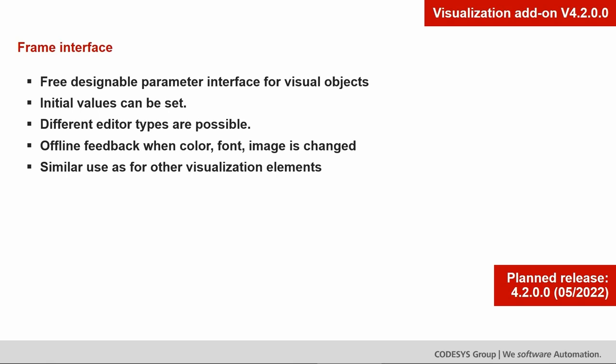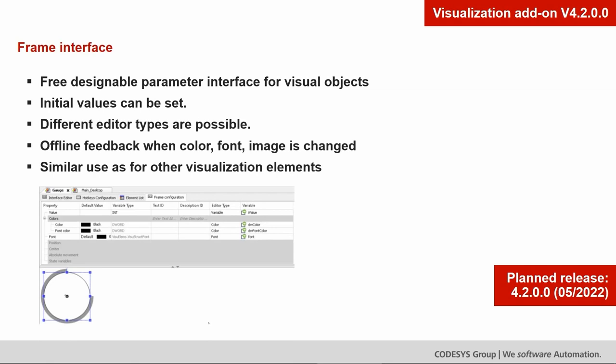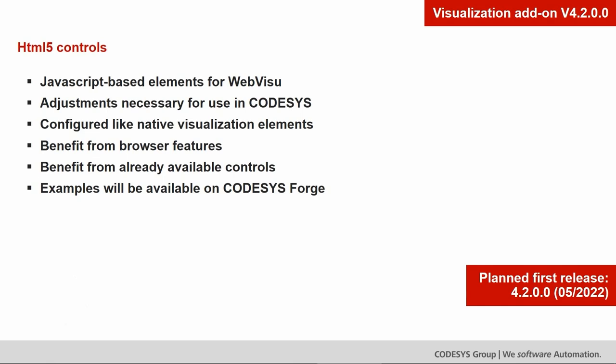The frame interface follows similar usage to other visualization elements. In the frame configuration, you can set colors, fonts, and more to create your own visualization element. For HTML5 support, we support JavaScript-based elements for web visualization only. You need to adapt the JavaScript files for use in CodeSys, and it is configured like a native visualization element. You can install HTML5 elements inside CodeSys and use them as any standard element. You benefit from browser features since JavaScript is executed on the client side, not on the PLC side, giving access to the large range of available HTML5 controls. Examples will be provided on CodeSys Forge.